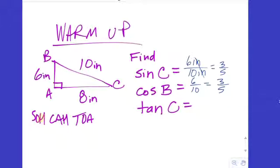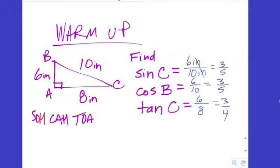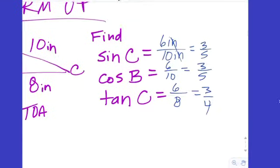For tangent of C, we use SOHCAHTOA: tangent is opposite over adjacent. For angle C, opposite is 6 and adjacent is 8, which simplifies to 3 fourths. So those are the three main trig ratios, which we're going to call trig functions.